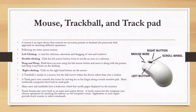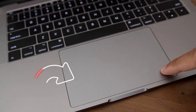In the practical part we will see what we mean by those actions. Double-clicking is when you click the left mouse button twice to invoke an icon or a selection. Drag and drop means you hold down an icon using the left mouse button, move it along with the pointer, and drop it anywhere on the desktop.